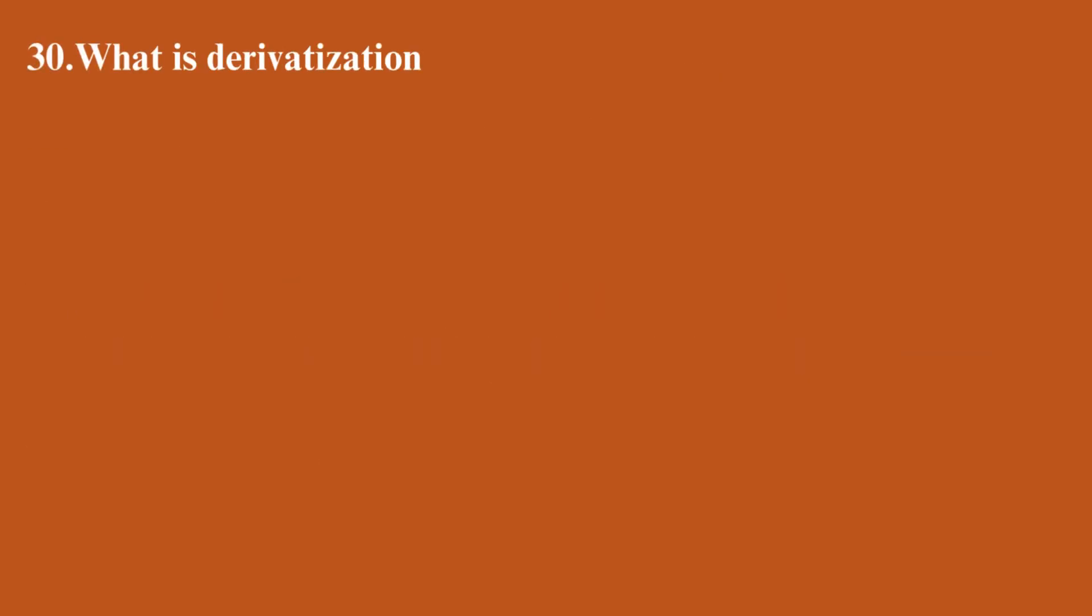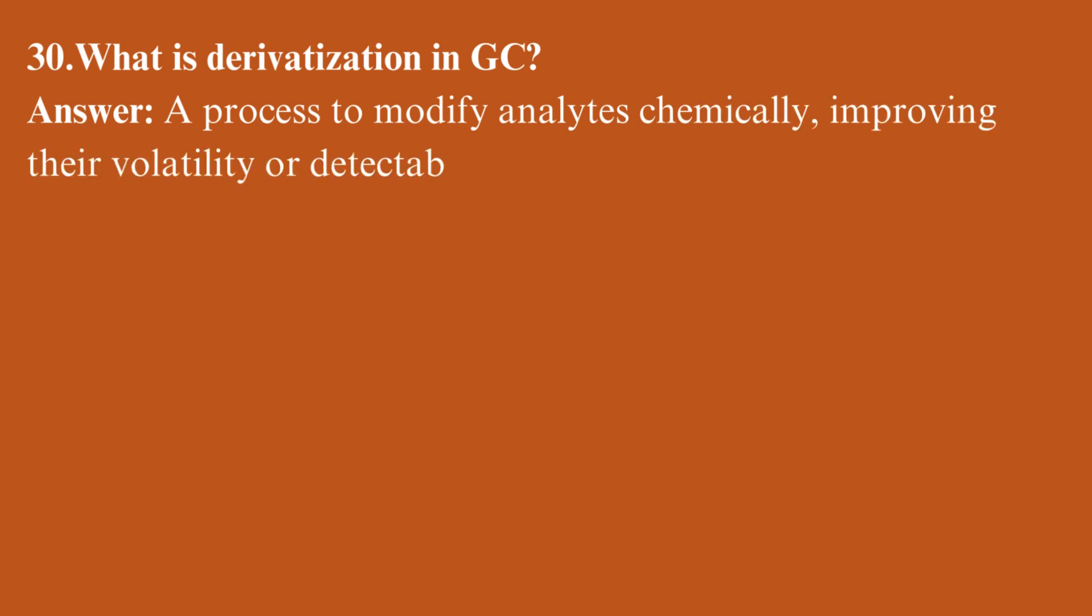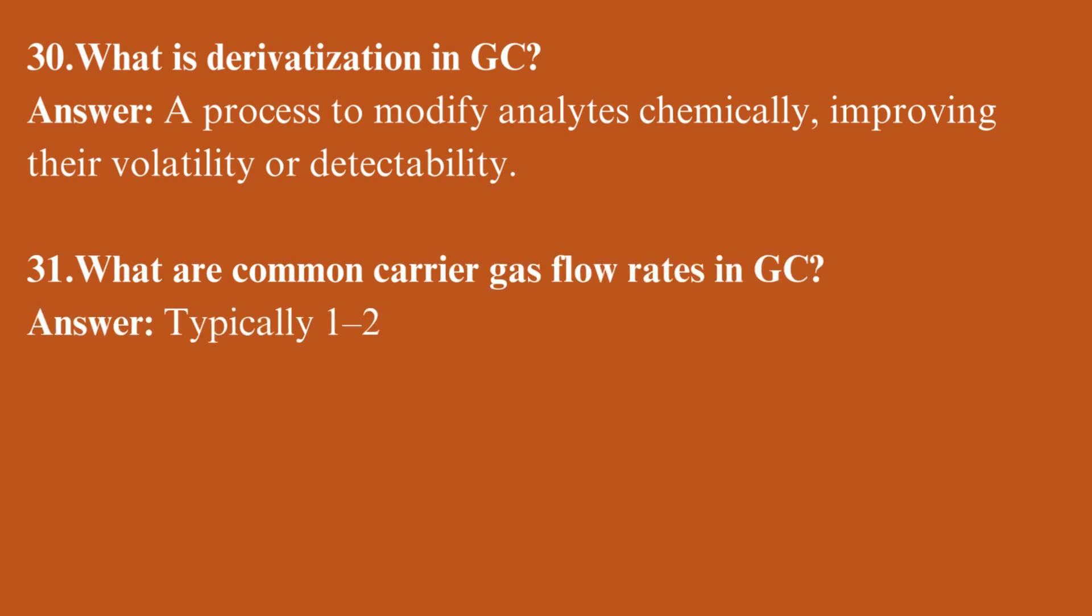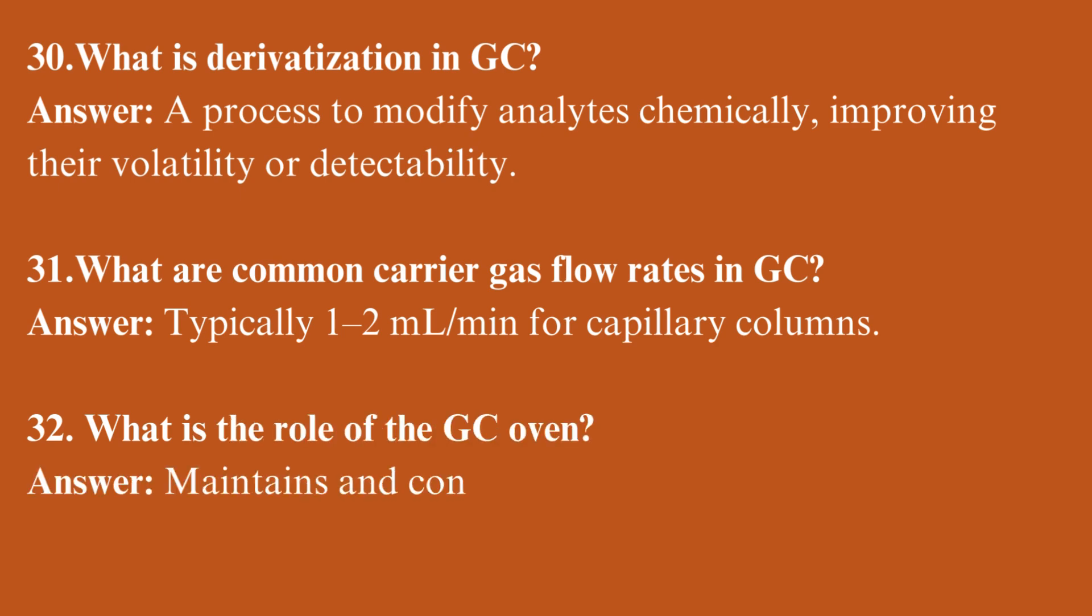What is derivatization in GC? A process to modify analytes chemically, improving their volatility or detectability. What are common carrier gas flow rates in GC? Typically 1 to 2 ml/min for capillary columns. What is the role of the GC oven? Maintains and controls the temperature to influence analyte separation.